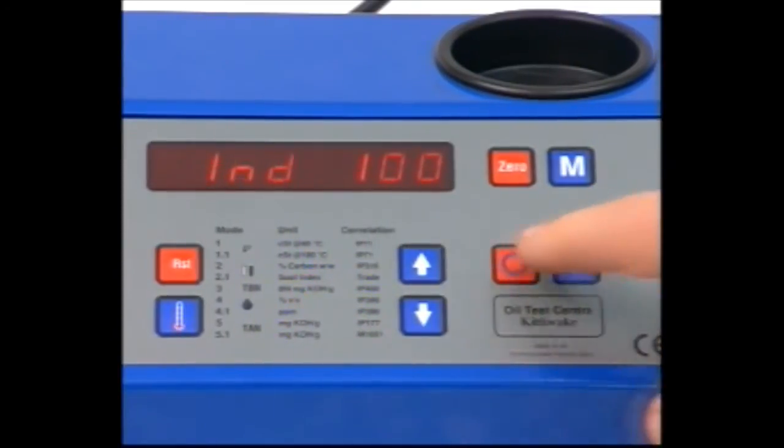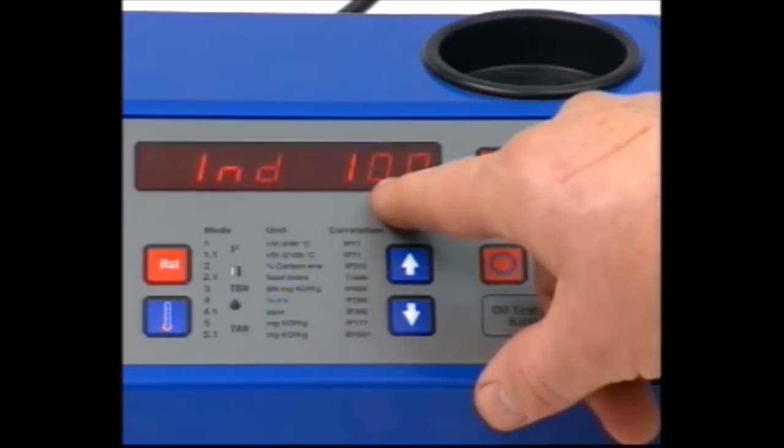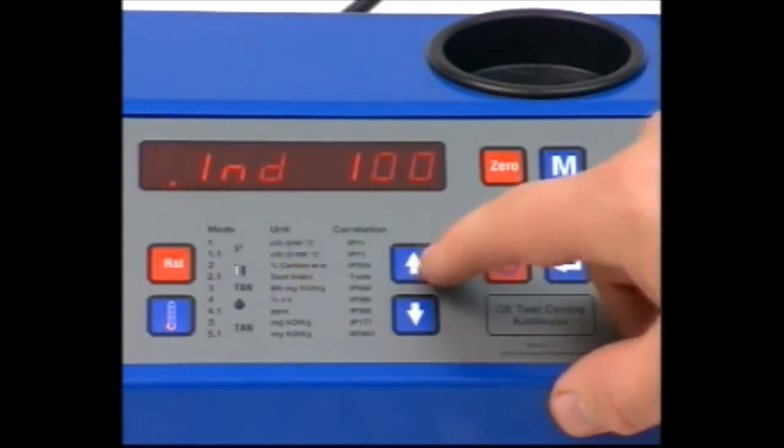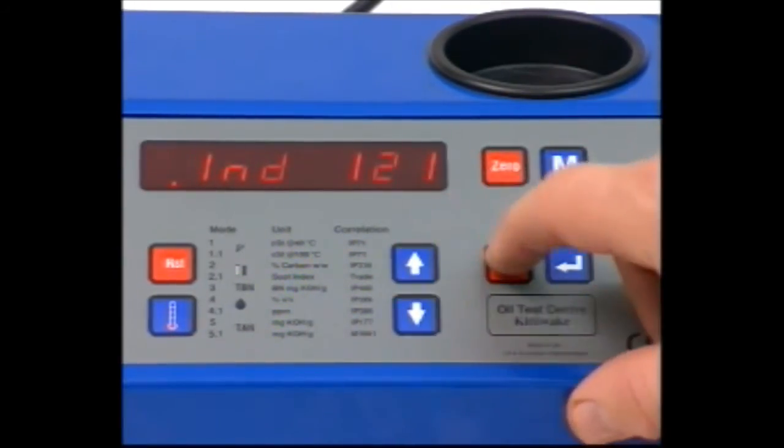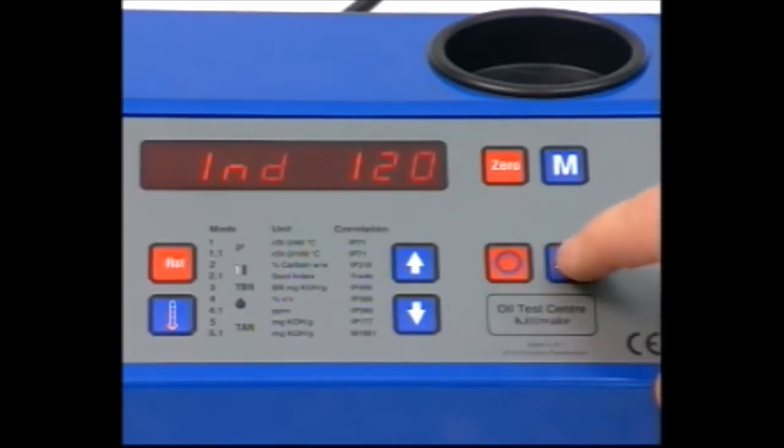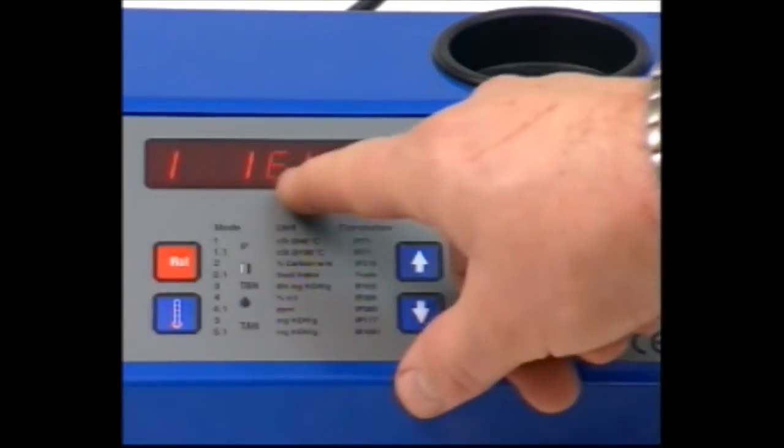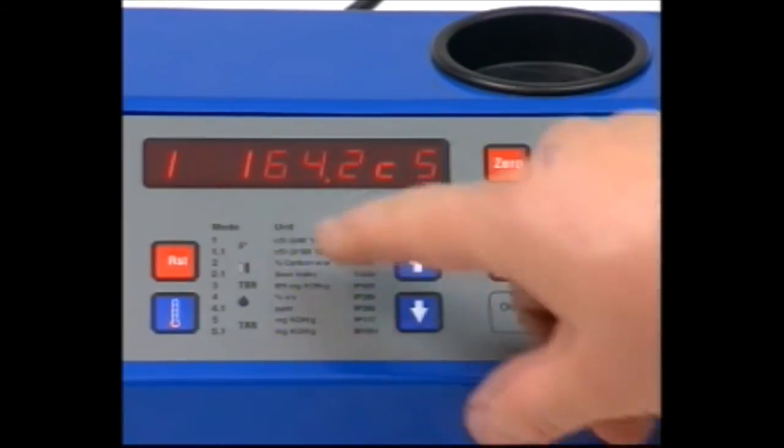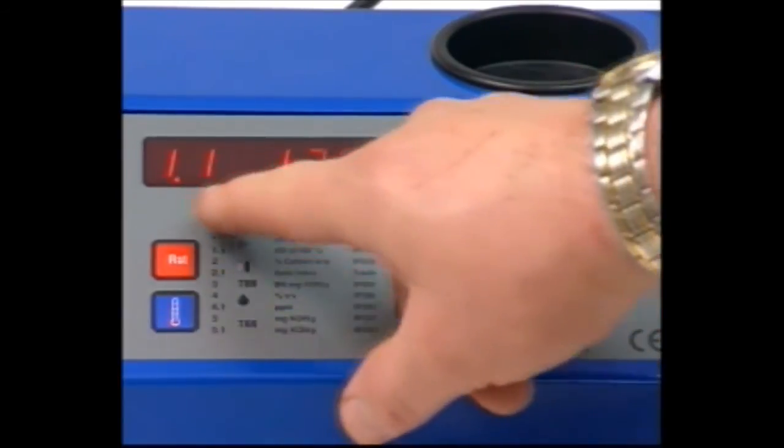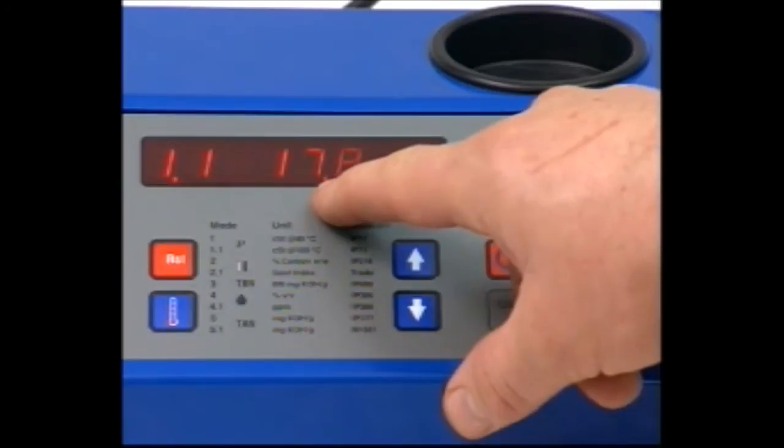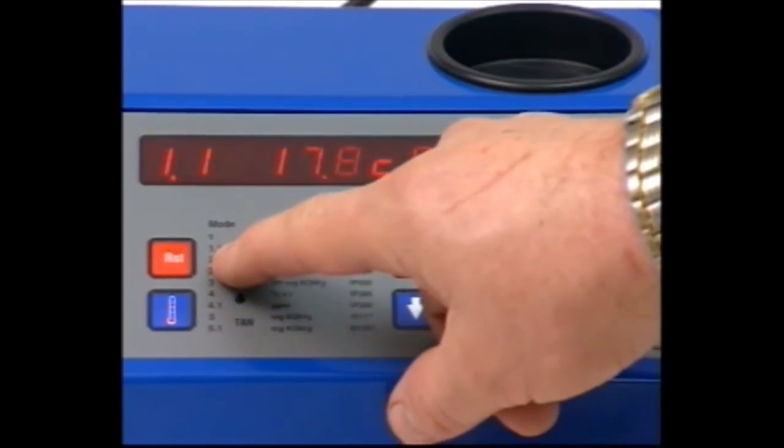Press Return again to change the viscosity index and enter the new value. The default here is 100. Press Return once more and the viscosity reading is corrected using the new values entered for density and viscosity index. Further readings will use these values until the Mode button is cycled or the Reset button is pressed.